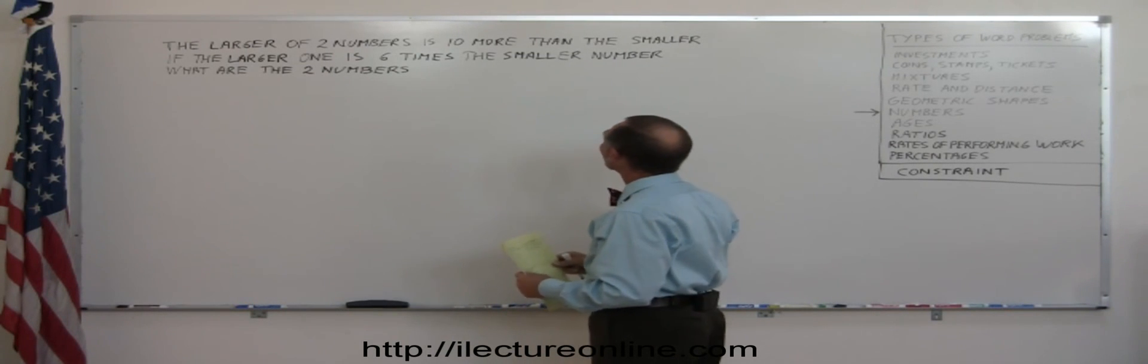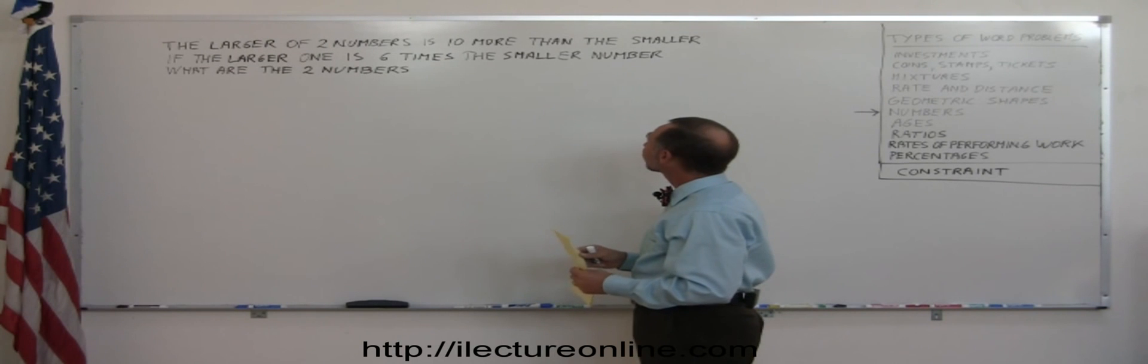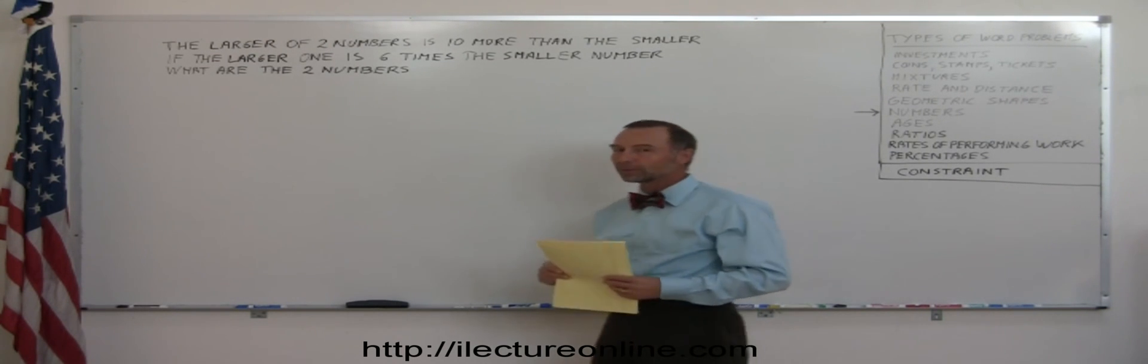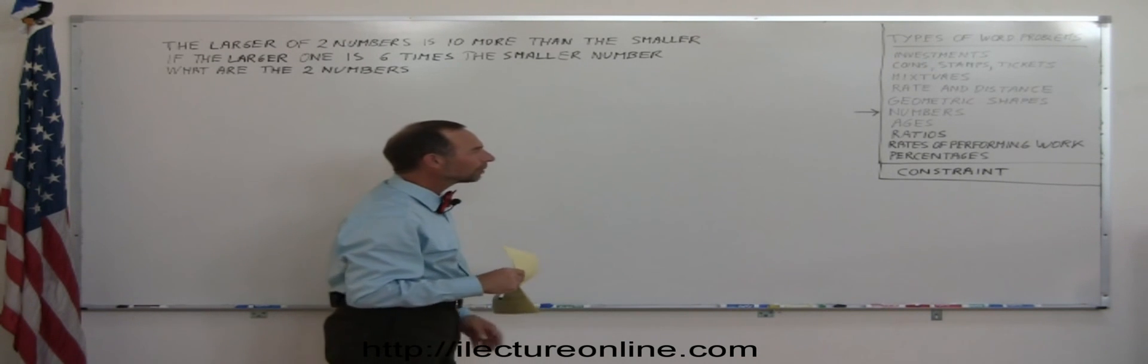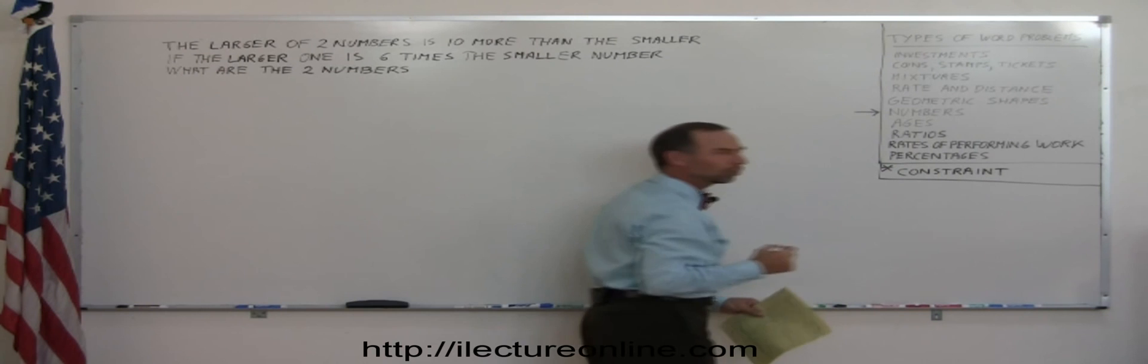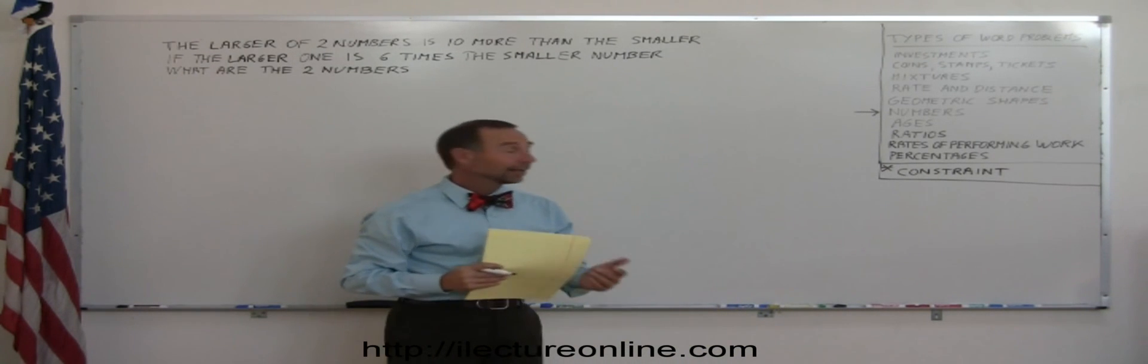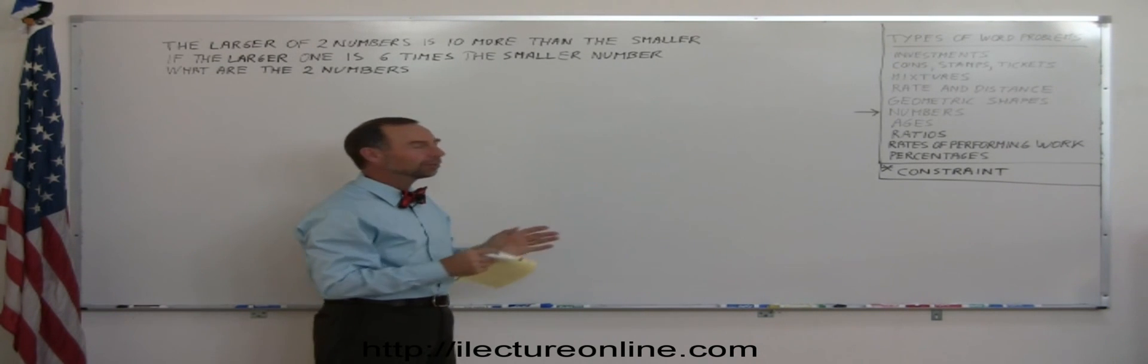The larger of the two numbers is ten more than the smaller. If the larger one is six times the smaller number, what are the two numbers? Before we get started, I put another word down here which we call constraint. It turns out that in a lot of problems, there's a certain constraint that helps you actually solve the problem.